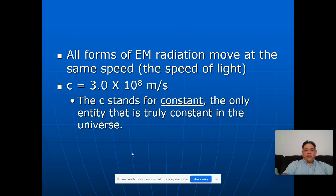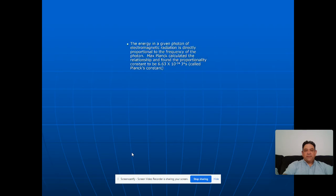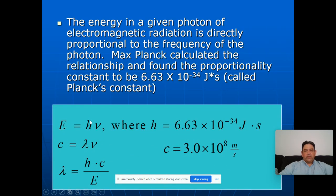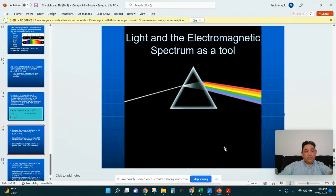All forms of electromagnetic radiation move at the same speed: three times 10 to the 8th meters per second. We use C as a constant. We came up with equations: energy is equal to Planck's constant times frequency — Planck's constant will be given to you on the test, you just need to know how to use it. Our second equation is C equals frequency times wavelength, because C, the speed of light, is the speed of electromagnetic radiation. The speed of light will also be given.